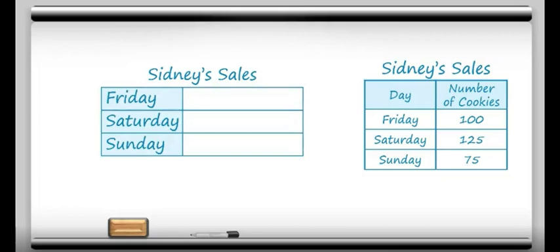So what kind of picture should we use? How about a cookie? That would make sense, right? You see in the table that on Friday it says there are 100 cookies. Well let's just go ahead and put 100 cookies next to Friday. Here's one, here's two — wait a minute. If I put 100 cookies here, first of all it's going to take a long time, and it's going to take up a ton of space. So get out of here, cookies.